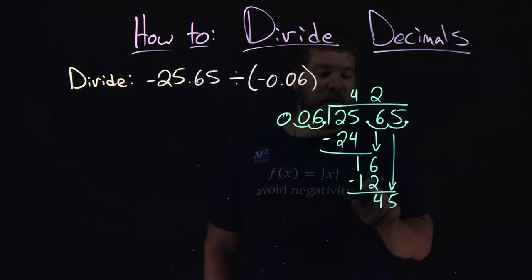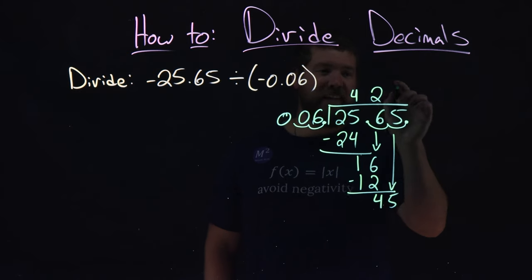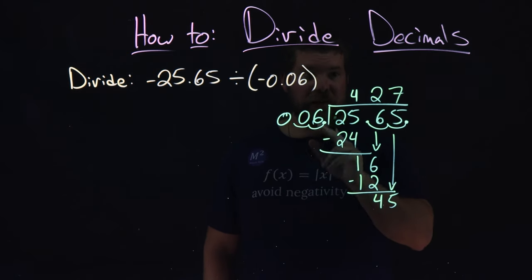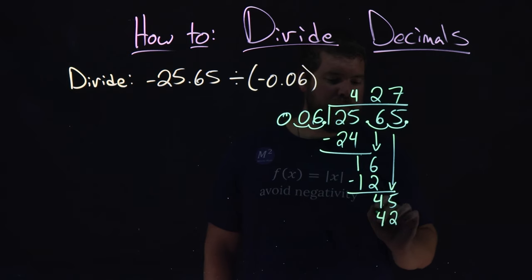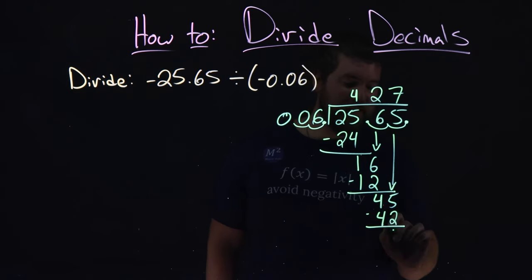Then from there, how many times does 6 go into 45? That's going to be 7 times. 7 times 6 is 42. Subtract them. 45 minus 42 is 3.